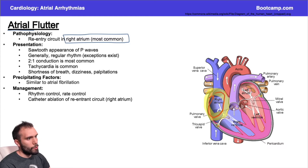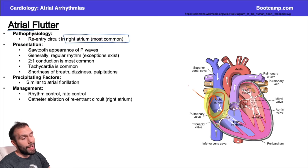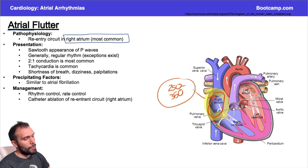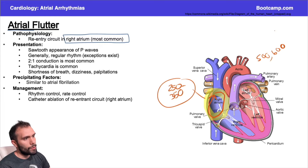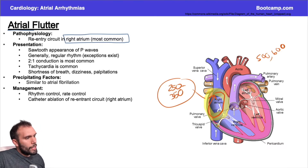Think of this as a signal running around a racetrack. This racetrack is not quite as fast as the signals we saw with afib. With atrial flutter, you're talking about an atrial rate of about 250 to 350. With afib we were talking about upwards of 500 to 600 in the atrium — not in the ventricles. The AV node is occasionally refractory, so the ventricular rate is lower in afib.